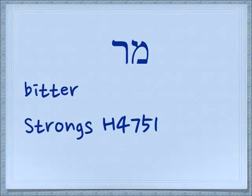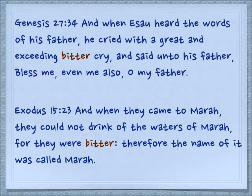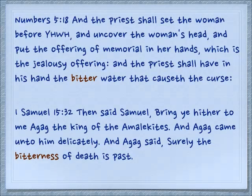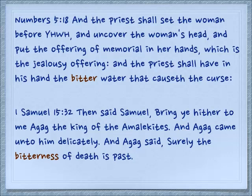The Mem and the Resh together make the word 'Mar,' which means bitter. In Genesis 24:37, when Esau heard the words of his father, he cried with a great and exceeding bitter cry. In Exodus 15:23, they could not drink the waters of Marah, for they were bitter — therefore the name was called Marah. In Numbers 5:18, the priest shall have in his hand the bitter water that causes the curse, which is the trial for the spirit of jealousy.